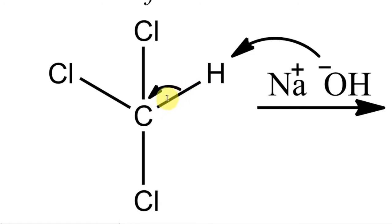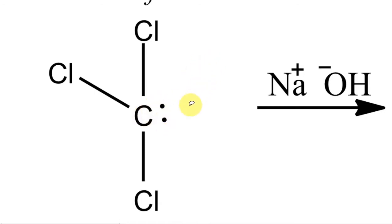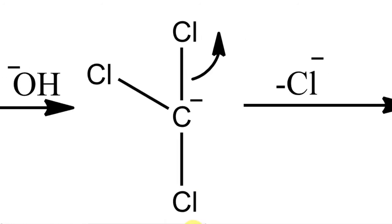There are two electrons in this C–H bond. The maximum probability of finding these electrons will be on carbon, not between carbon and hydrogen — that is what the curved arrow indicates, meaning this bond is breaking. Both electrons go to carbon; hydrogen leaves as H⁺, which combines with OH⁻ to form water. When both electrons are on carbon, carbon gains hydrogen's electron — it gets an extra electron and therefore a negative charge.